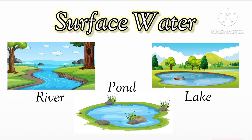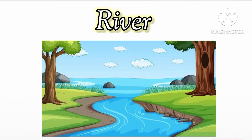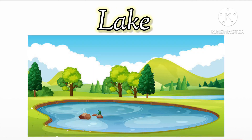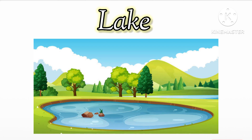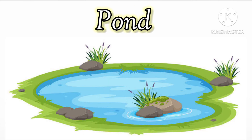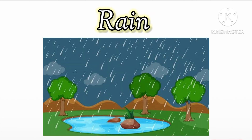Now we will see surface water sources, that means water which is found on the surface of the ground. The first is river — the river flows and we get fresh water. The next is lake, which collects rain water. And then there is pond, which is a small water source.